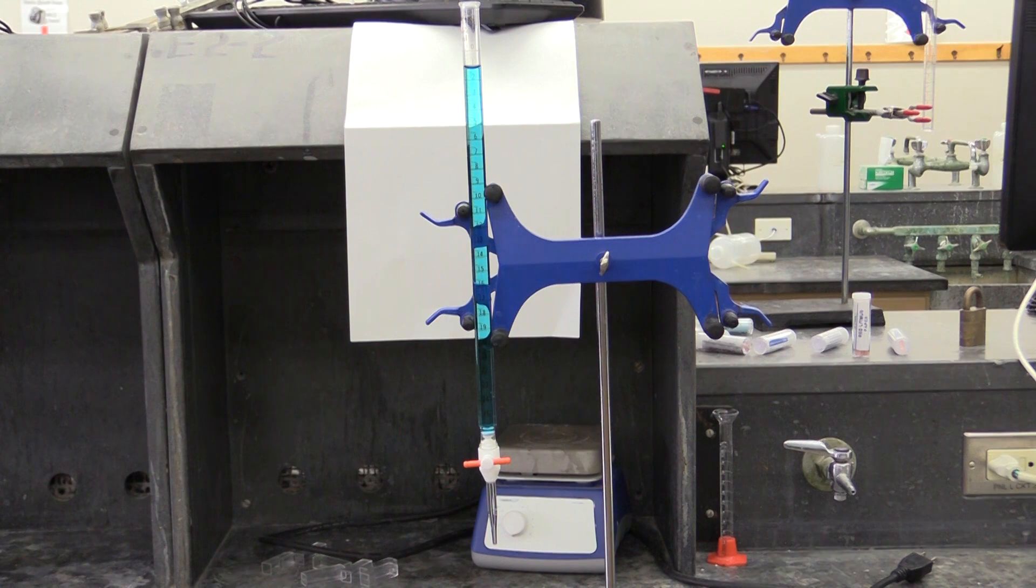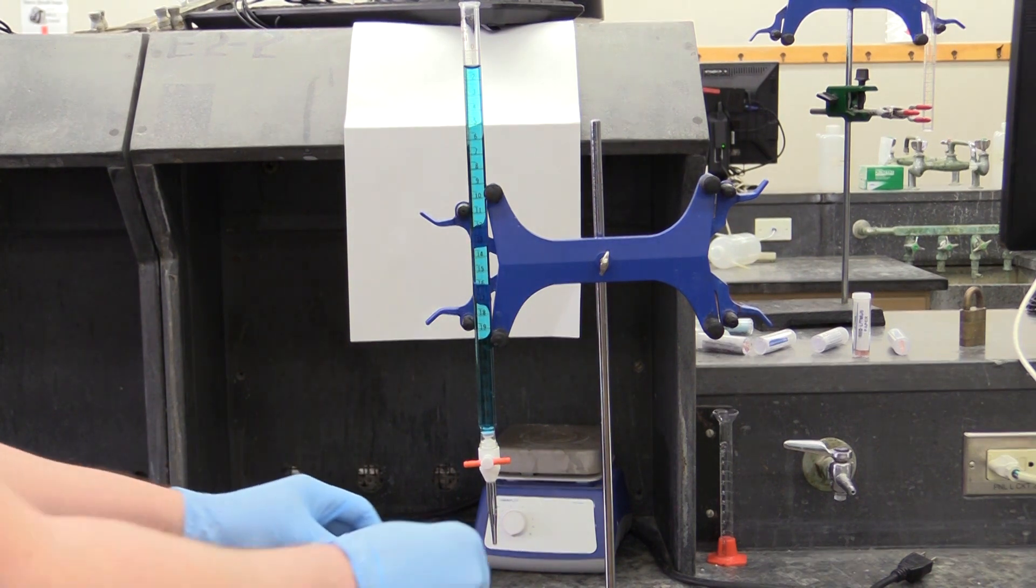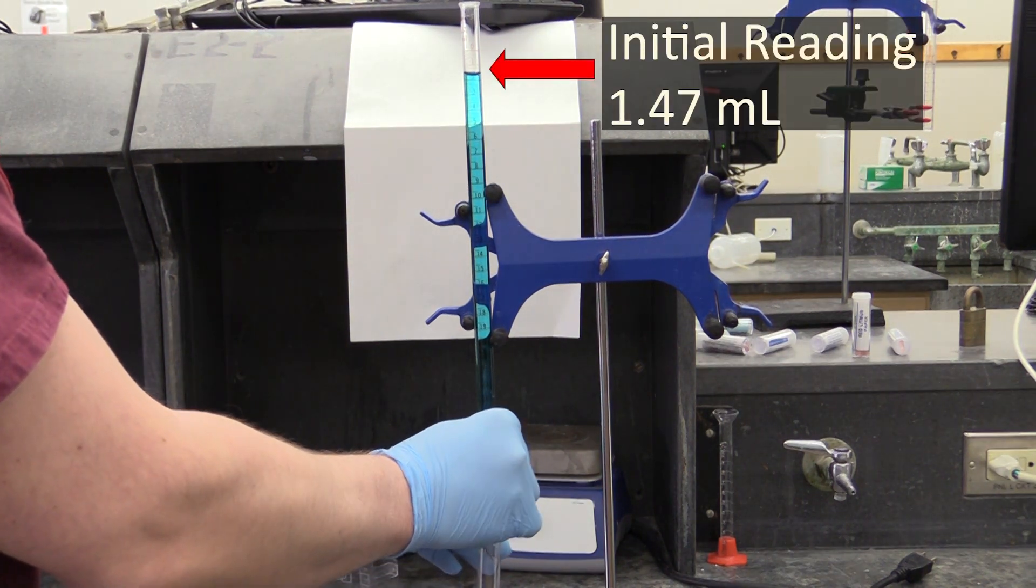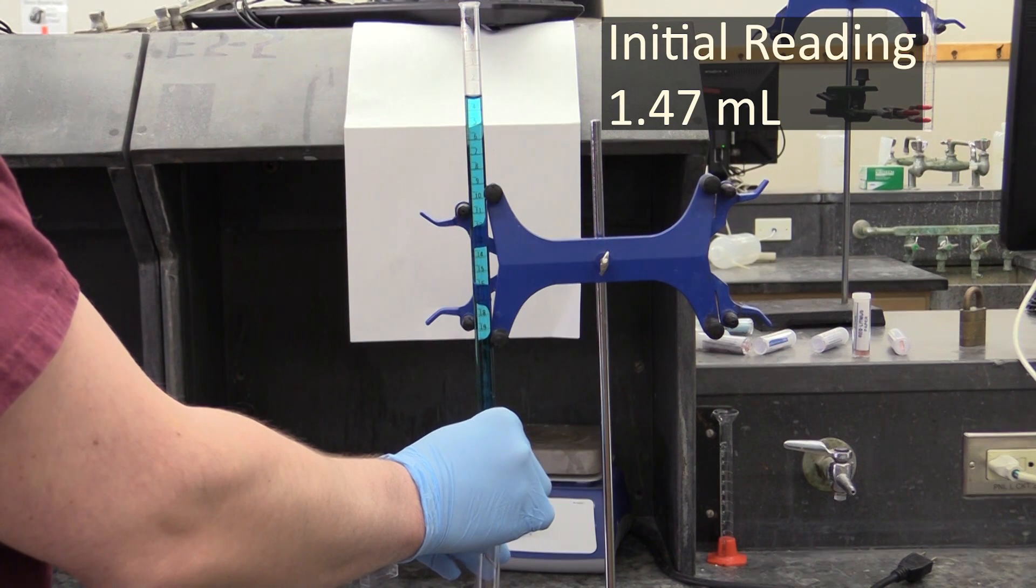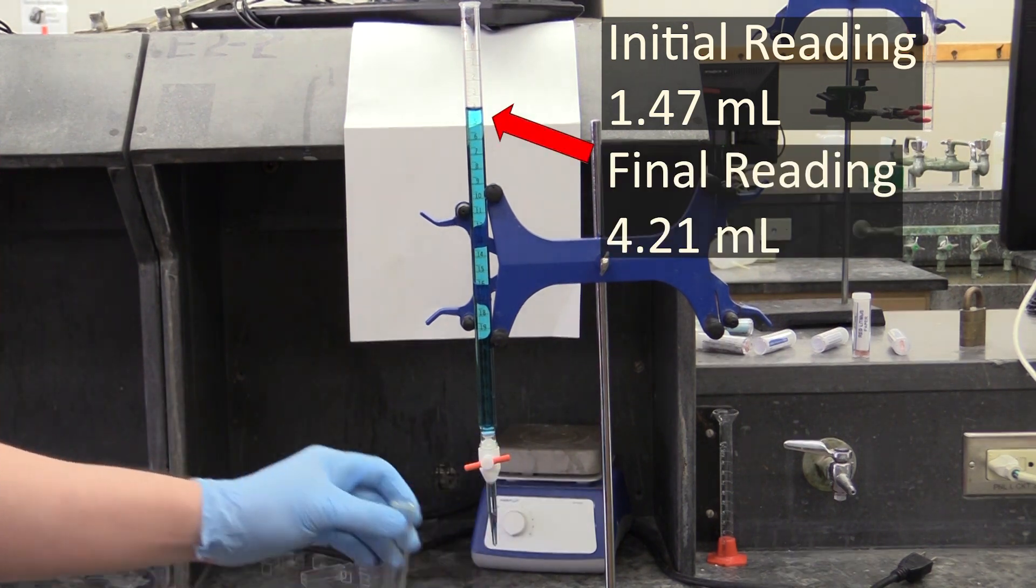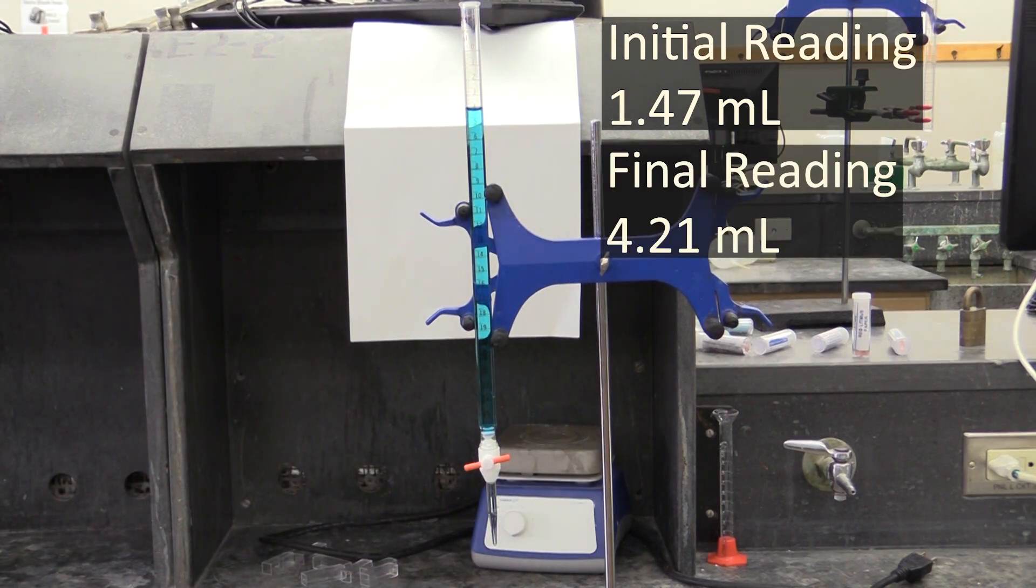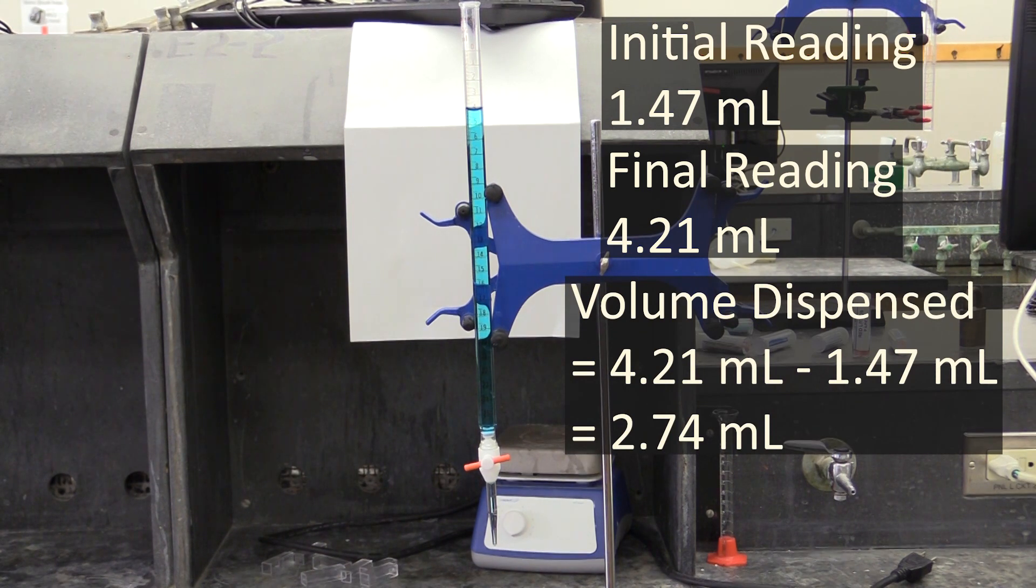To determine how much liquid you dispense from your burette, you will first take an initial reading before you dispense anything. Once you reach your titration's endpoint, you will then take a final reading. You then calculate how much solution you dispensed by subtracting the initial reading from the final.